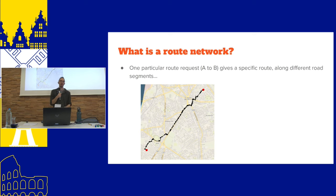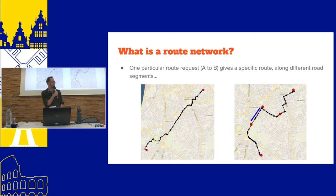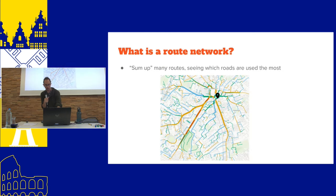This is what a route network does. One particular route between two points crosses a bunch of individual roads. A second route crosses some of the same roads. If you calculate routes for all of those driving trips as if they were cycling instead, and look for the most popular roads, you end up with the route network — the thicker lines are the ones many trips cross, and therefore the most important to make safe to cycle on.